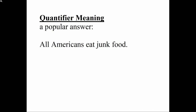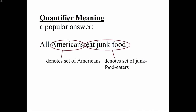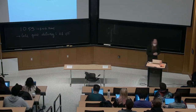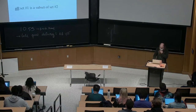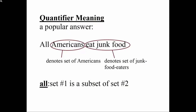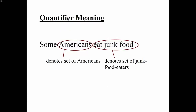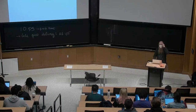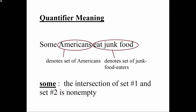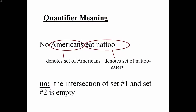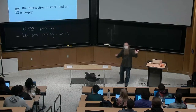Here's a popular answer for quantifier meaning: when you say 'all Americans eat junk food,' you are asserting a relation between the set of Americans and the set of junk food eaters — something about what happens when you intersect those two sets. Depending on what quantifier you use, you make different assertions about the relation between the sets. 'All' says set number one is a subset of set number two. 'Some' — the intersection is non-empty. 'No' says the intersection of set one and set two is empty.